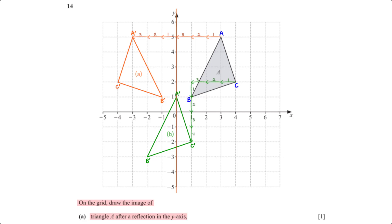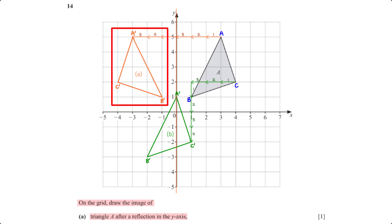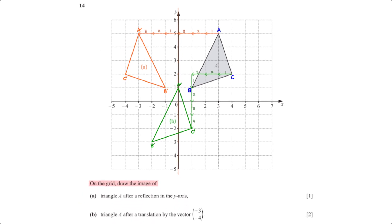On the grid, draw the image of triangle A after a reflection in the y-axis. We draw the y-axis as the line of reflection. For each vertex, we measure the horizontal distance to the y-axis and reflect it to the opposite side — for example, point A is 3 units left of the axis, so its image is 3 units to the right. We repeat for all vertices to map out the reflected image.